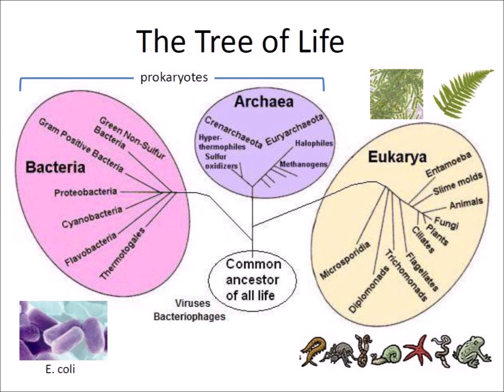Eukaryotes belong to the domain eukarya. These organisms have cell walls that contain a nucleus and other genetic material. Eukaryotes may be monocellular like yeasts, or multicellular like trees, worms, and frogs. The root of the evolutionary tree corresponds to the common ancestor of all life, which gave rise to all organisms now living on Earth.